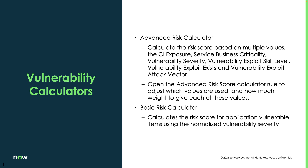Vulnerability calculators: there are two types available in the system. These allow you to determine what the risk is based on CI attributes, user attributes, or vulnerability attributes. You have the advanced risk calculator, which can use CI exposure, business criticality, or severity to help drive that. You also have a basic risk calculator that uses a range of severity values to assign risk.